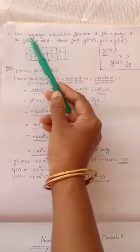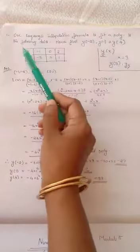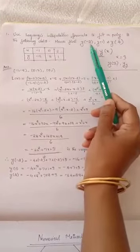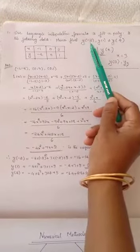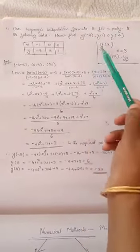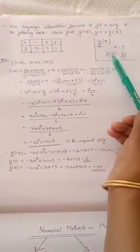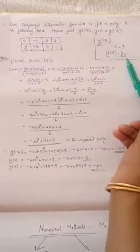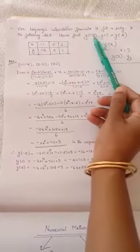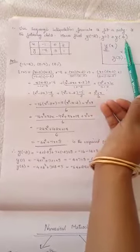There is one more example: use Lagrange's interpolation formula to fit a polynomial and hence find the functional value y of minus 2. y of minus 2 means we are trying to find the functional value when x is equal to minus 2. Similarly, a functional value at x equal to 3 can be written as y of 3 or y3. So we are finding functional values at x equal to minus 2, x equal to 1, and x equal to 4.